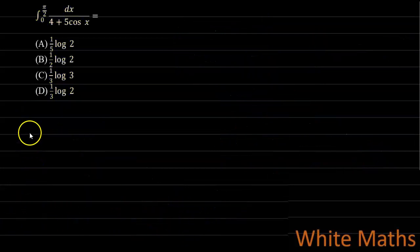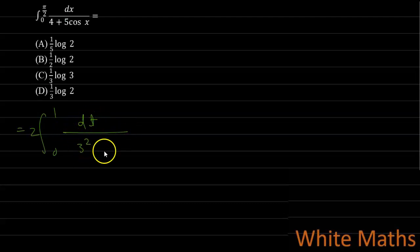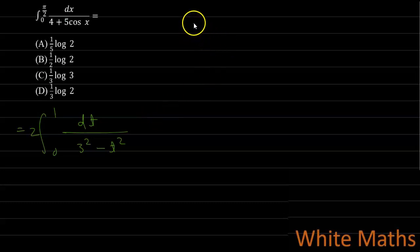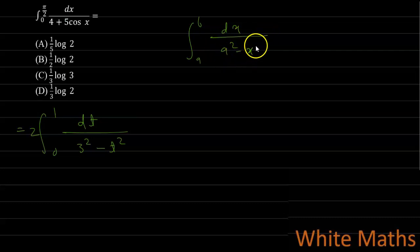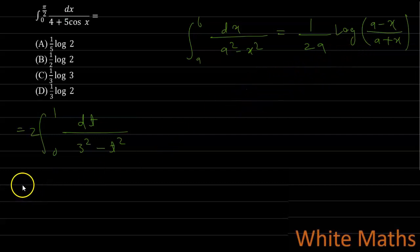This integral can also be written as 2∫₀¹ dt/(3² − t²). We apply the standard formula: ∫ dx/(a² − x²) = (1/2a) log|(a − x)/(a + x)| + C. Here a = 3, so we apply this formula to find the integral.